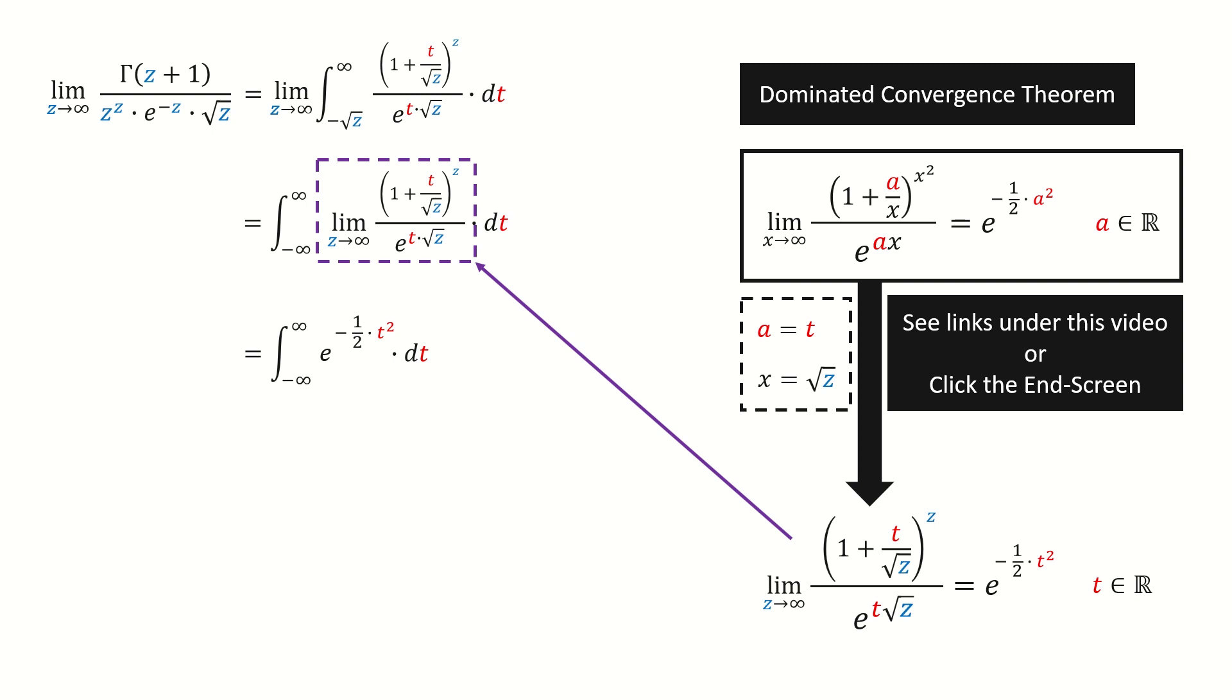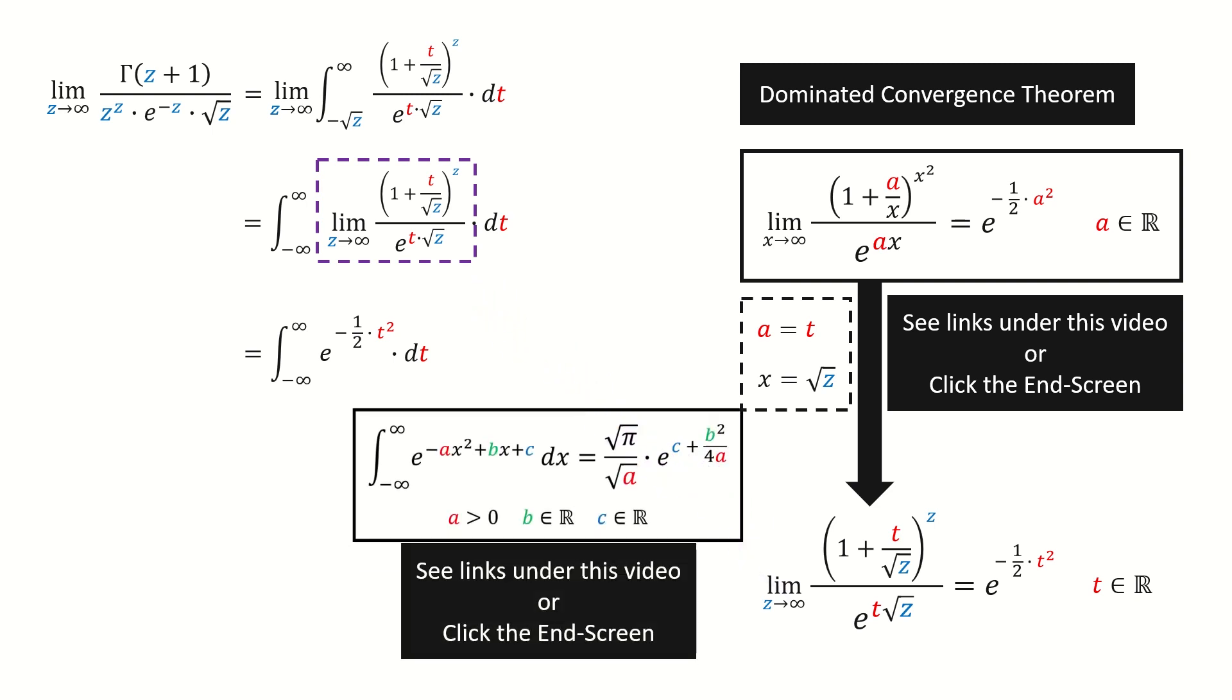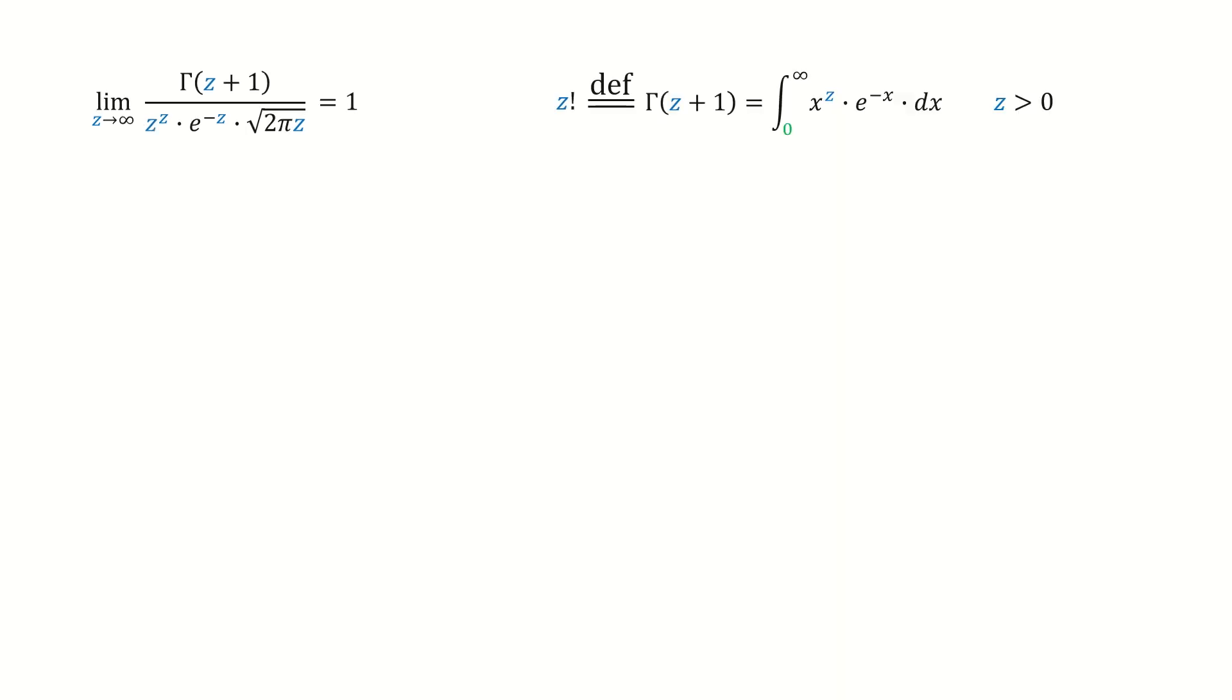Plug in and we got here. Recall the general form we derived for Gaussian integral. So it equals square root 2 pi. I copy it here. Then we divide square root 2 pi on both sides.